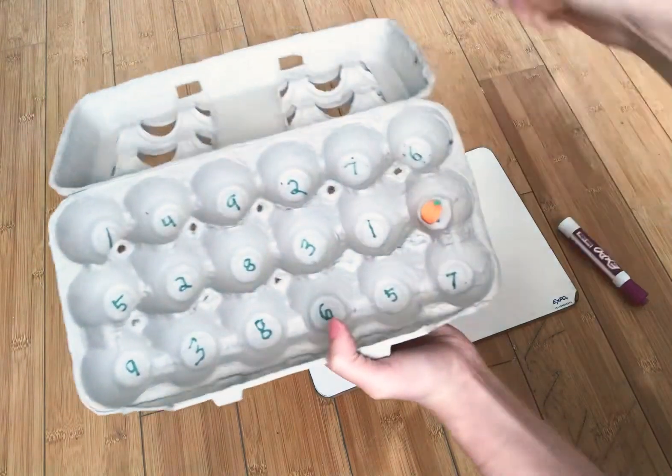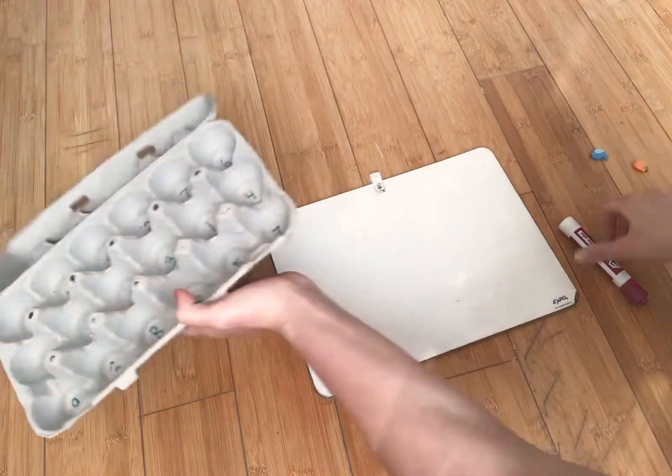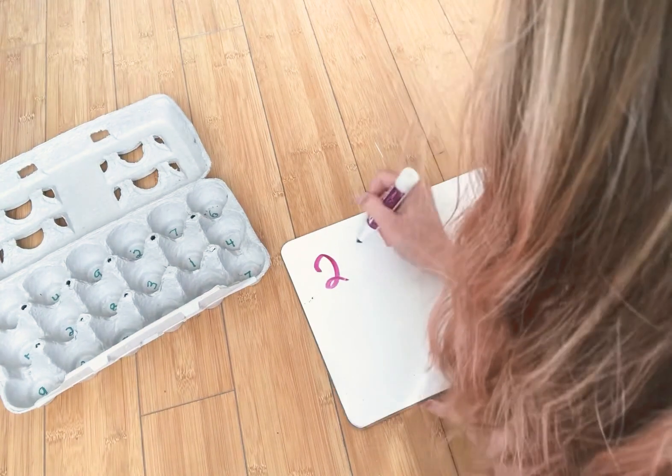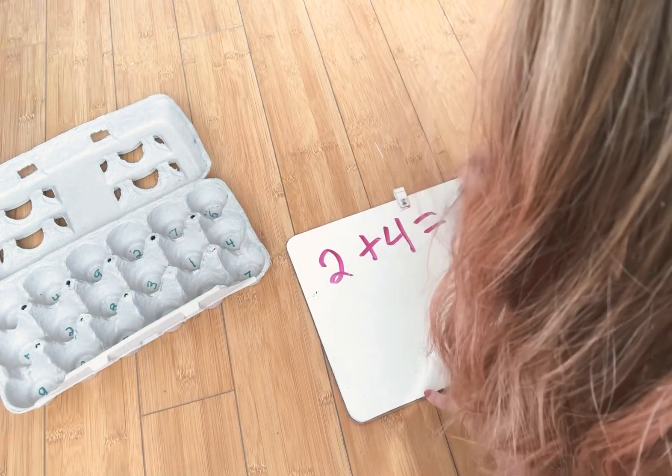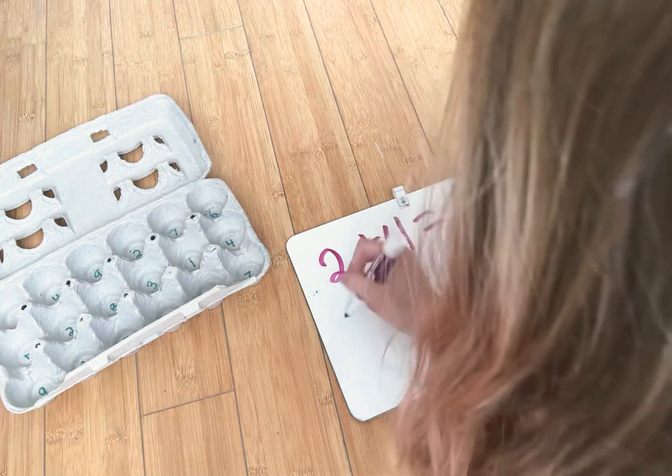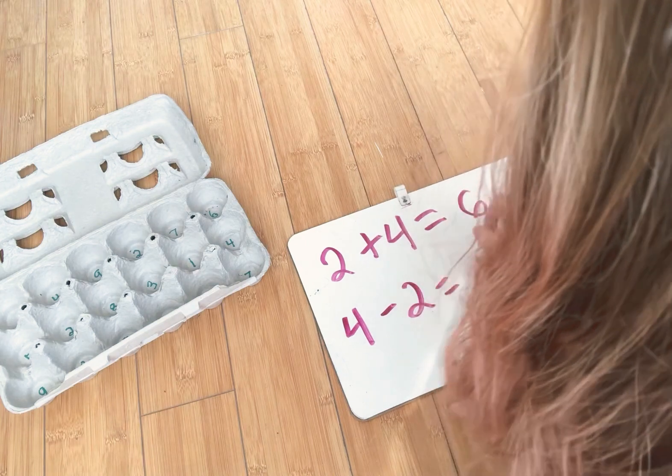So today we have 2 and we have 4. So then we can write either 2 plus 4 equals 6, or if you wanted to do subtraction, you take the bigger number. 4 minus 2 equals 2.